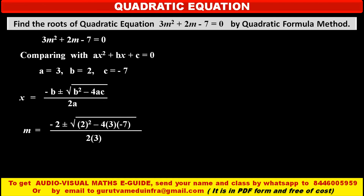Now, b squared means 2 squared, minus 4 into a (that is 3) into c (that is minus 7). This expression under the square root is also known as the discriminant, upon denominator 2 into a, that is 3. Solving: 2 squared is 4, minus 4 into 3 into minus 7 gives plus 84. So 4 plus 84 means the discriminant is 88. So we have under square root of 88 upon denominator 6.